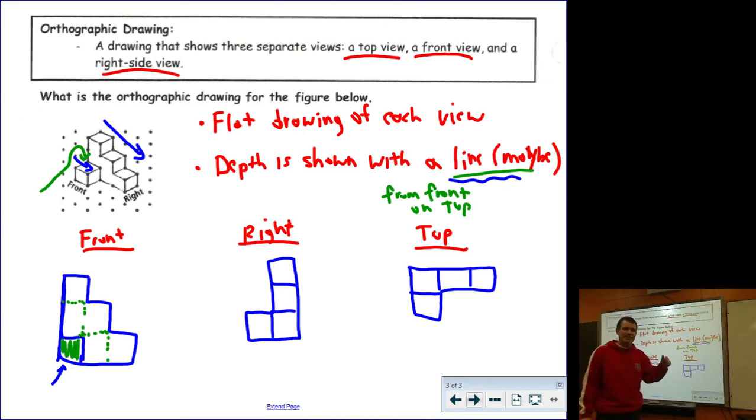You got all three types now: nets, isometric drawings, and orthographic drawings. Good luck on the homework.